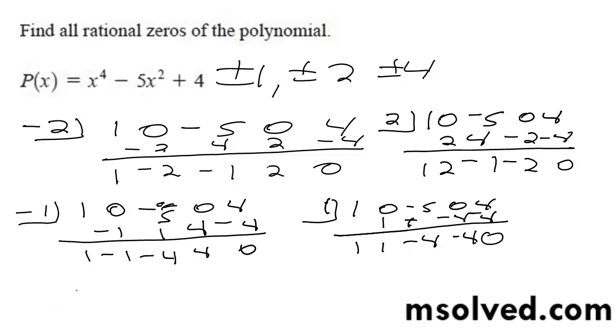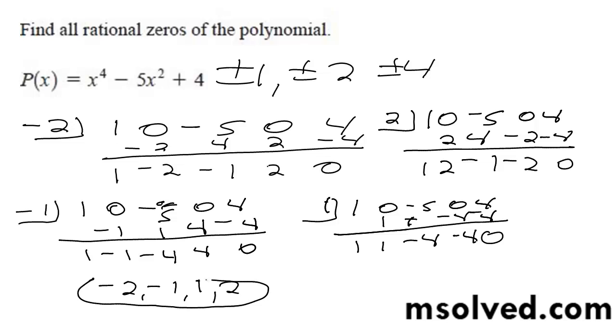All right, so your solutions are negative 2, negative 1, 1, and 2. And that's it. There you have it.